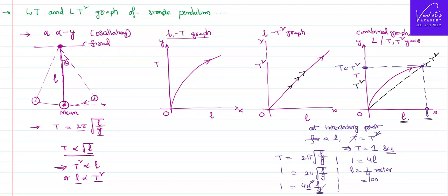You know, 1 meter is 100 centimeters, so it is 25 centimeters. If the length is 25 centimeters, L and T and T² graphs will get intersected, whose time period will become one second.